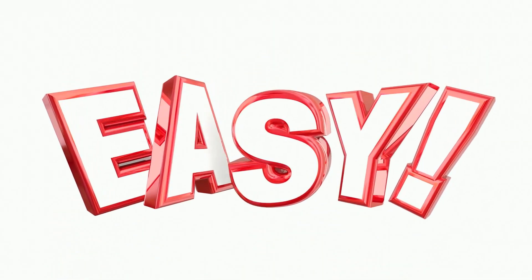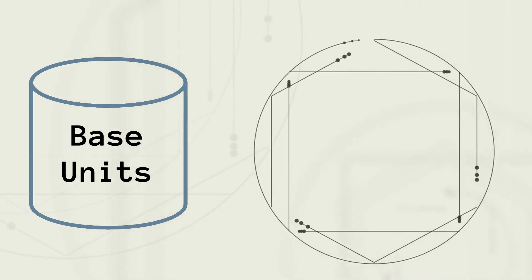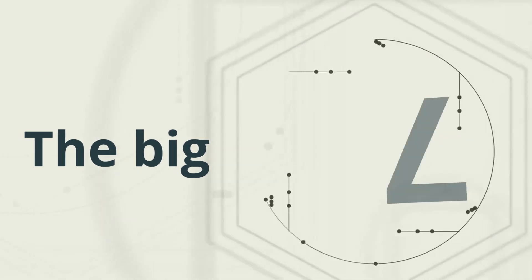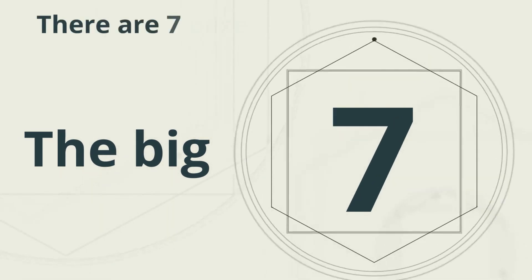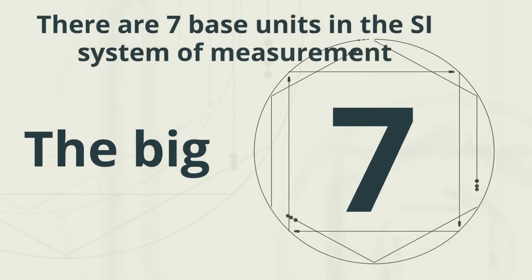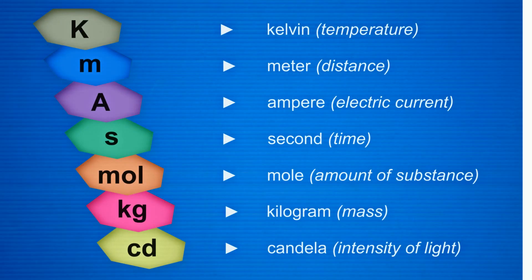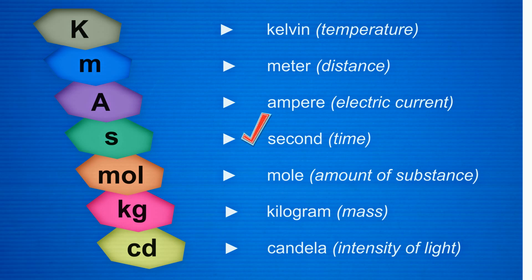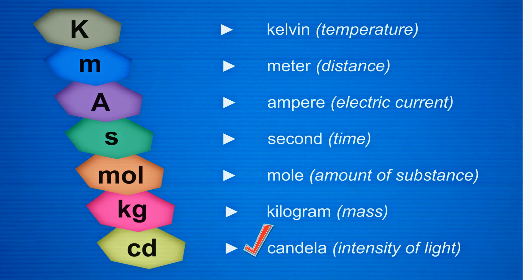Next, we are going to focus on the base units and then the prefixes. I call them the big seven because the SI system is built around these units. They are: meter for length, kilogram for mass, second for time, ampere for electric current, kelvin for temperature, mole for the amount of substance, and candela for how bright a light is.